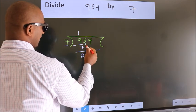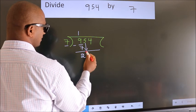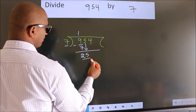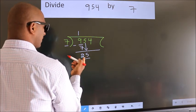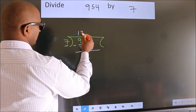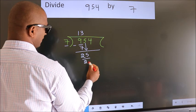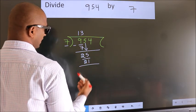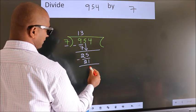After this, bring down the beside number. So, 5 down. So, 25. A number close to 25 in 7 table is 7 threes, 21. Now, we subtract. We get 4.